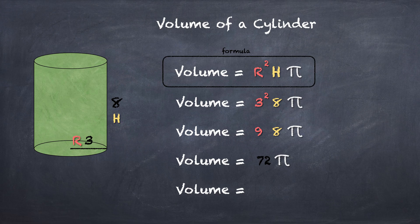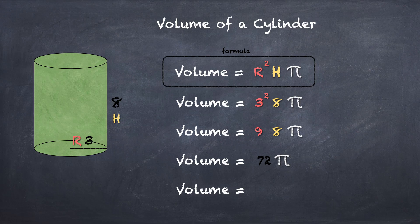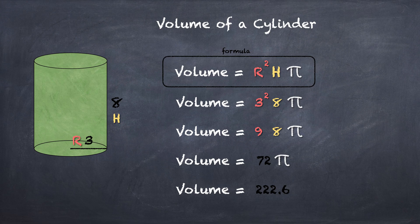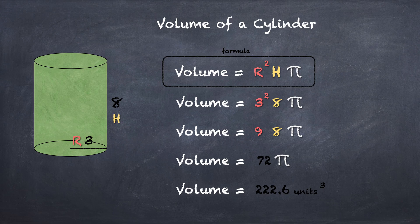Remember, π is essentially just 3.14. 72 times π is going to be 226.2. And in terms of volume, we always write it in units cubed. Always remember to have your answer in units cubed.